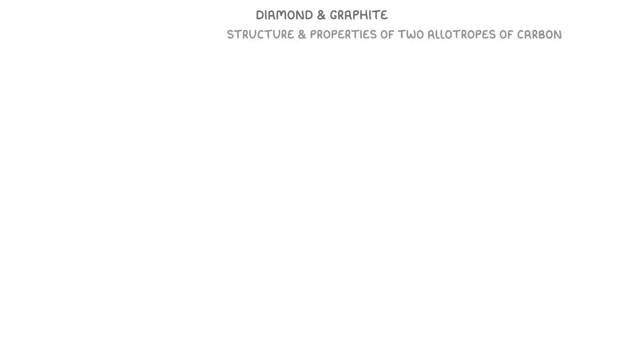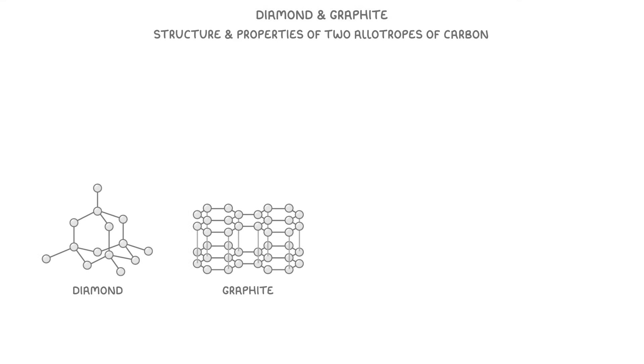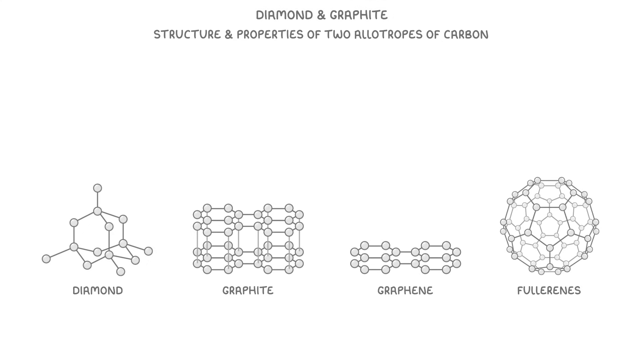In today's video we're going to learn about the structure and properties of two allotropes of carbon, diamond and graphite, and we'll consider the other allotropes, graphene and fullerenes in the next video.